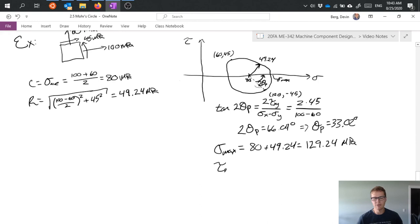Now I'm probably interested in my tau max especially if I'm talking about a ductile material and in this case I can see my tau max is just my radius right 49.24.